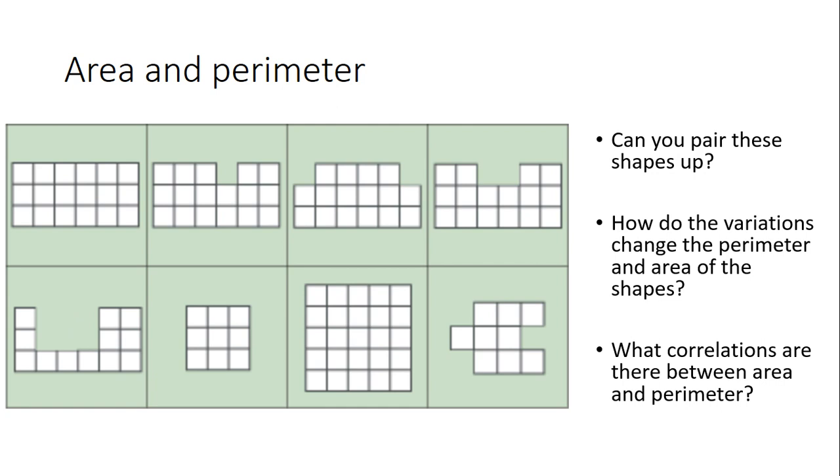The final question I want you to think about really is: what correlations, what links are there between area and perimeter? Or are there any correlations between area and perimeter, or are they totally independent, or totally dependent, or is it kind of sometimes, or does it depend? Have a think about that. Pause the video and I'll speak to you in a second.